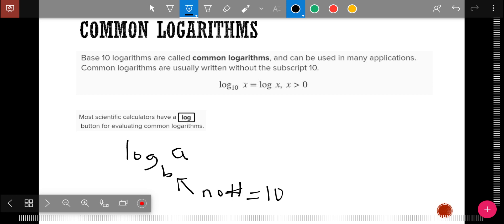And so the common logarithm, just like think of the square root sign. The square root sign, if it doesn't have a number in the radical sign, then it's automatically a square root. If it doesn't have a number in the log, then it's automatically a 10.